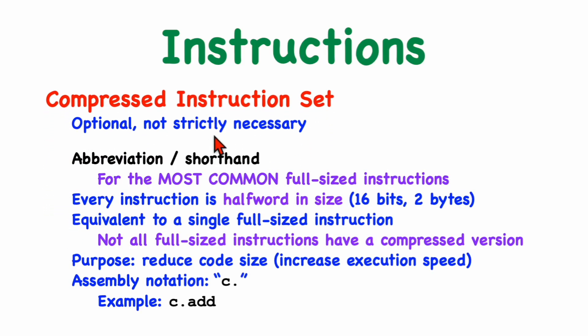As for the compressed instruction set, it's optional and will not be included on some RISC-V processors. Compressed instructions can be considered an abbreviation or a shorthand form of the most common full-sized instructions. So every compressed instruction is half the size of a full-sized instruction. They are 16 bits or two bytes in size. And every compressed instruction is equivalent to a single full-sized instruction. But of course, not all full-sized instructions have compressed versions.